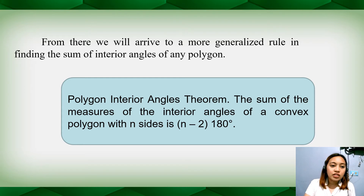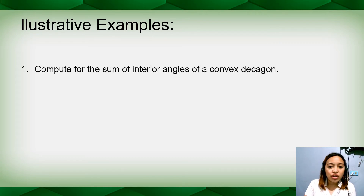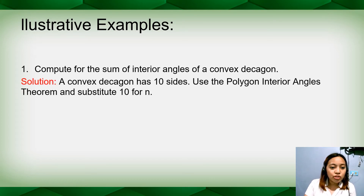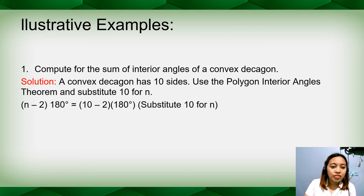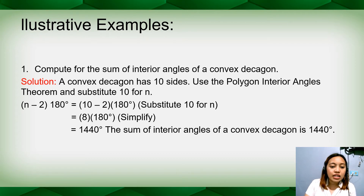Let us have illustrative examples. Number one: compute for the sum of interior angles of a convex decagon. A decagon has 10 sides. Using the polygon interior angles theorem, substitute 10 for n: (n − 2) × 180 = (10 − 2) × 180 = 8 × 180 = 1,440 degrees. So the sum of interior angles of a convex decagon is 1,440 degrees.